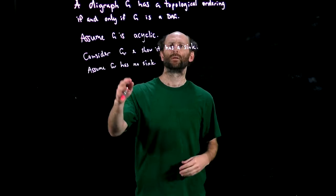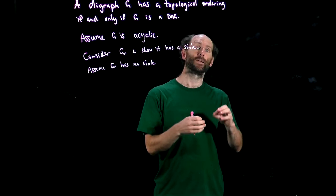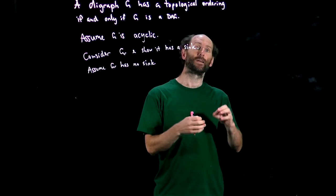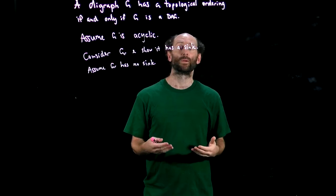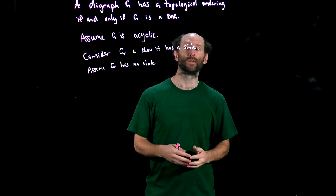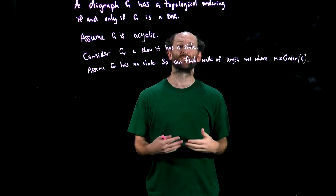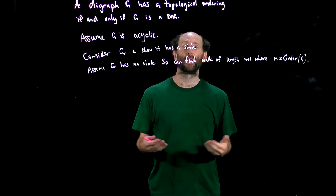G_r has no sink, so that means if we start a walk from any node we can always continue that walk as long as we want because every node has an out-neighbor as it's not a sink. That means we can walk for at least n plus one steps where n is the order of G. If our walk is of length n plus one we must have visited one of the nodes at least twice as there are only n nodes. That means that our walk contains a cycle.